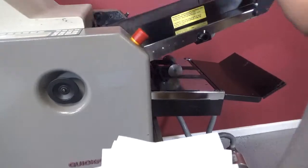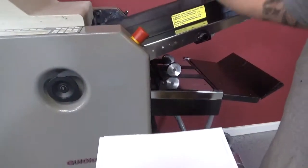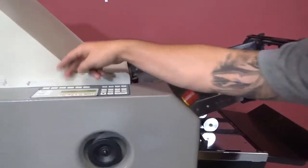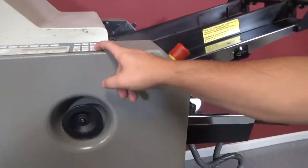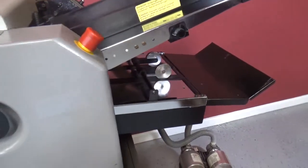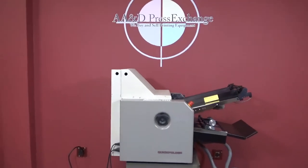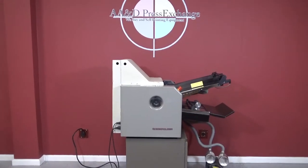If you had a larger sheet, longer sheet, all you have to do is move this, select your half fold, press enter, and you'll see your stop move to that position. So again, that's an automatic air-fed Heidelberg Stahl Quick Folder.